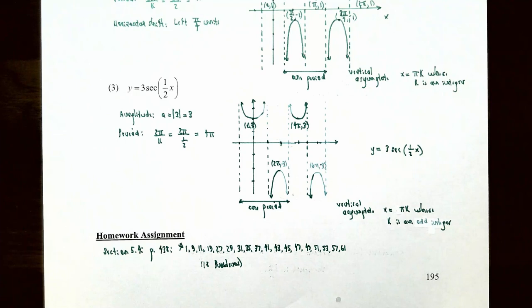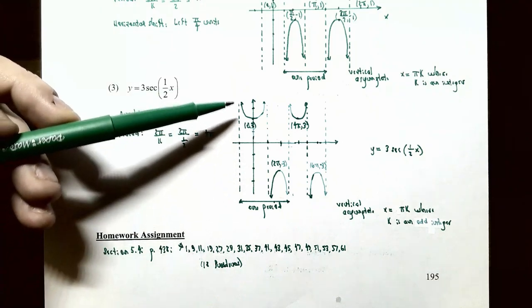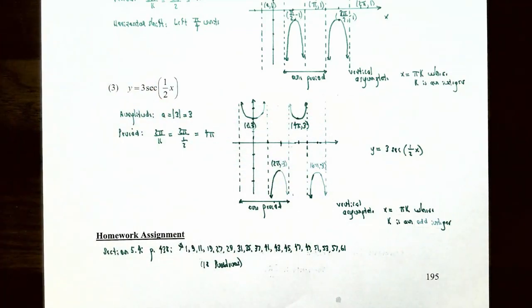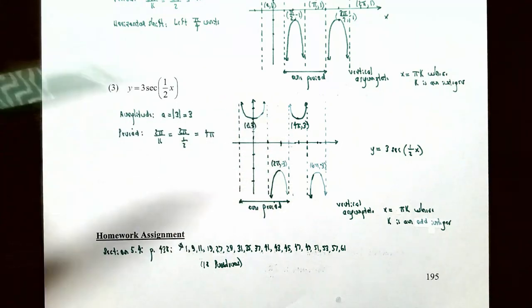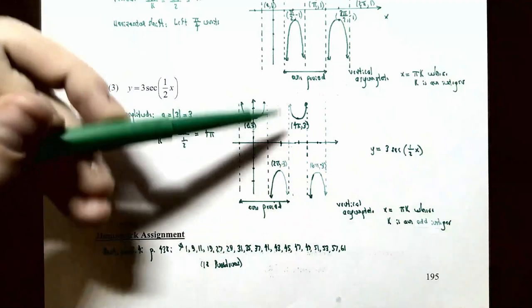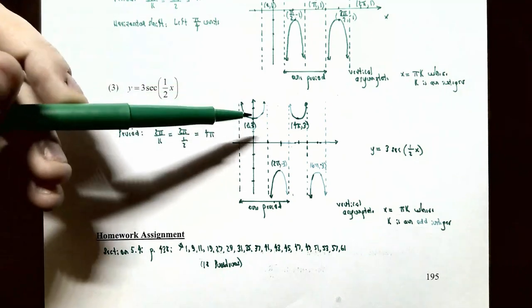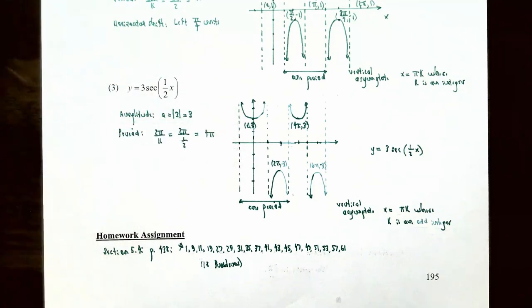For y equals 3 times secant of (1/2)x, vertical asymptotes are of the form x equals kπ where k is an odd integer — at x equals negative π, π, 3π, 5π, 7π, and so on. Since the amplitude is 3, the graph goes no lower than (0, 3) and no higher than (2π, negative 3) due to the vertical stretch by a factor of 3. We'll graph one complete period of 4π radians between x equals negative π and x equals 3π. On the right side of x equals negative π and on the left side of x equals π, the graph increases without bound and goes no lower than the point (0, 3).